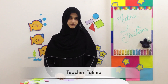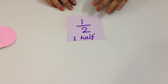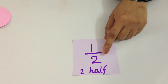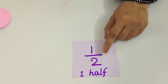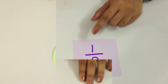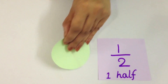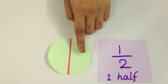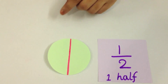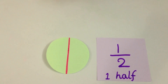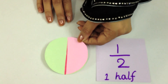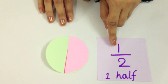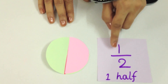We're going to learn about halves of different shapes. One half is written like this — it means a shape has two equal parts, and we are talking about one part. This circle has two equal parts, which we can see here. One half means any one part of the shape. To show the fraction, we take this paper and cover one half of the circle. This is one half.